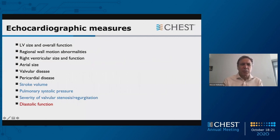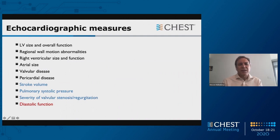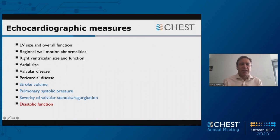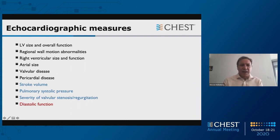Switching gears away from balloon pump, let's talk about echocardiography. Here are the things you can measure: left ventricular size and overall performance, regional wall motion abnormalities, right ventricular size and function, atrial size, valve assessment, and pericardium — in particular, looking for a pericardial effusion. With Doppler, you can measure stroke volume, estimate pulmonary systolic pressure, and assess the severity of valvular stenosis and regurgitation using color Doppler and various Doppler measures. Echocardiography with Doppler is also a way to assess diastolic performance.